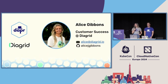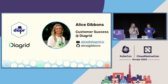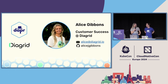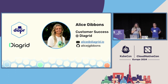Hi everyone, thanks so much for coming. My name is Alice Gibbons. I am head of customer success at Diagrid. We enable tools and APIs for developers building distributed systems, and we are big supporters of the Dapr project, which I'm going to talk about today and how it enables productivity.